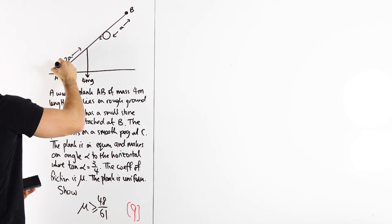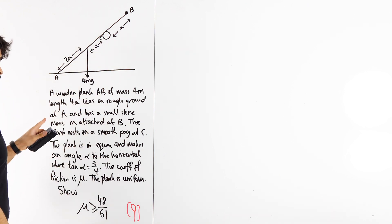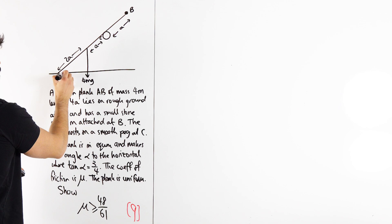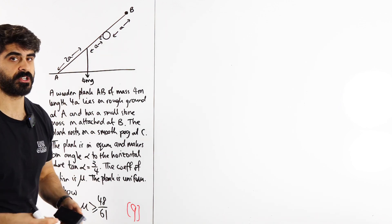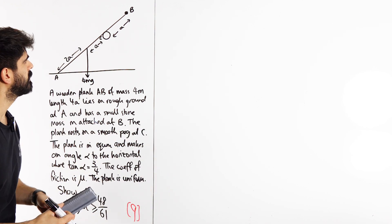I'm just going to get rid of that, put 2A. That means this is A if that's A. Lies on rough ground, so it's lying on rough ground at A. Now, what does the, so we have to consider friction, right? Now, always just think about this practically.